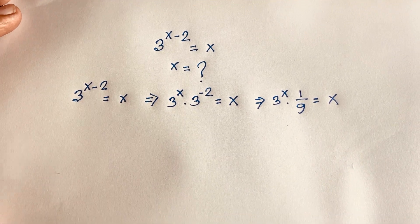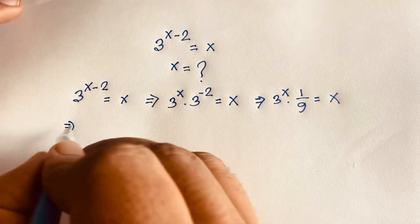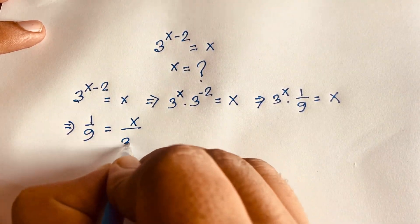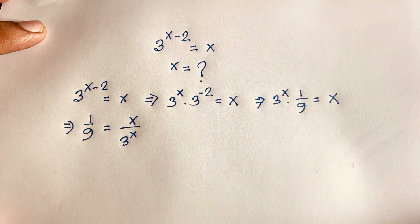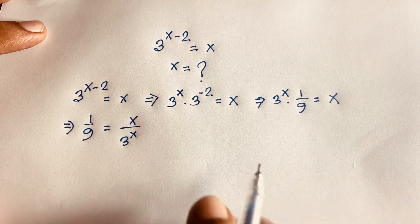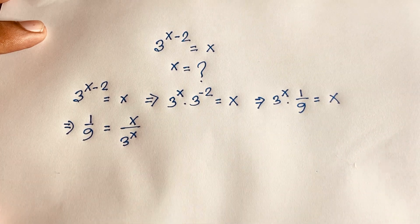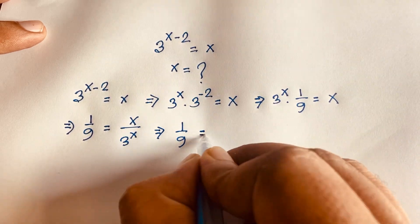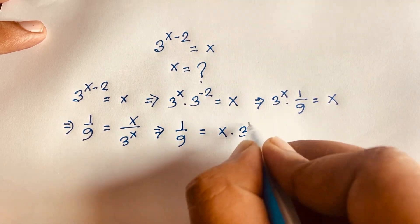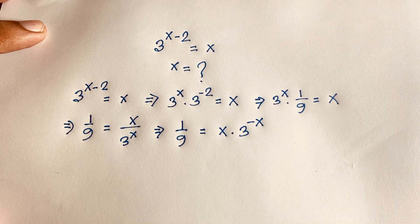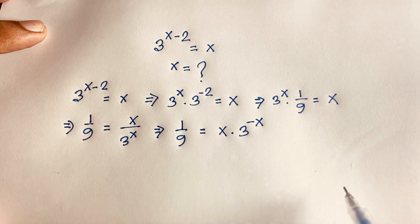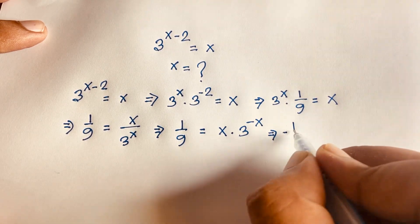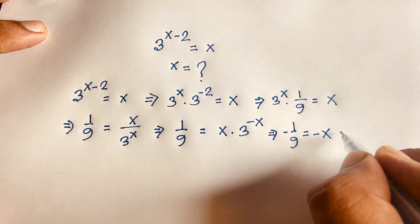Rearranging, I divide both sides by 3 to the power x, giving 1 over 9 is equal to x over 3 to the power x. This can be written as 1 over 9 is equal to x times 3 to the power minus x. Then I multiply both sides by negative 1, so minus 1 over 9 is equal to minus x times 3 to the power minus x.